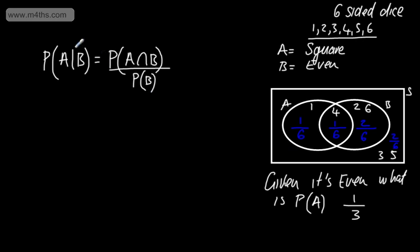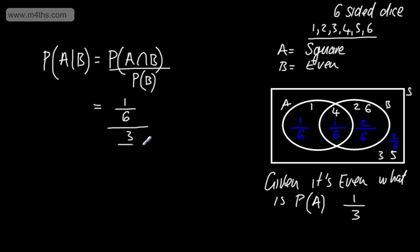Let's now verify this using the formula. We can say this is the probability of A intersection B divided by the probability of B — noting that P(B ∩ A) is exactly the same as P(A ∩ B). So we have 1 out of 6 divided by 3 out of 6. The 6s cancel, giving us 1 out of 3, confirming our answer.